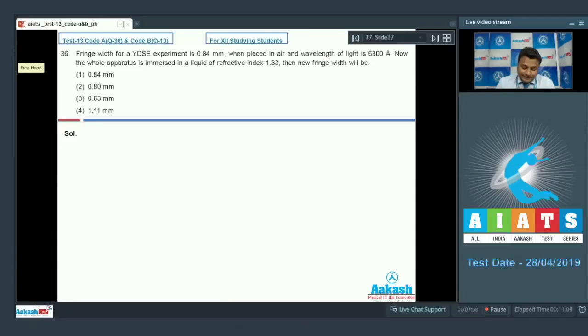Question number 36, everyone. Fringe width for Young's double slit experiment is 0.84 millimeter when placed in air, and wavelength of light is 6300 angstrom. Now the whole apparatus is immersed in a liquid of refractive index 1.33. The new fringe width will be what? Now we know very well the expression for fringe width beta is given by lambda.